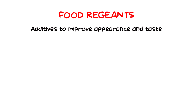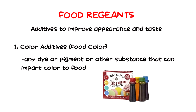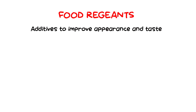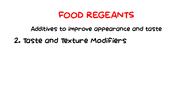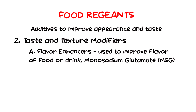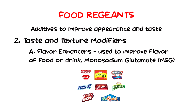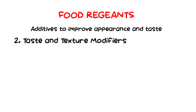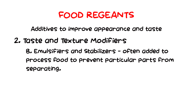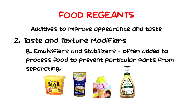Another material found in the environment are the food additives. They are additives to improve appearance and taste. We have two categories under it. Number one is color additives or food color — any dye, pigment, or other substance that can impart color to food. Next are taste and texture modifiers: flavor enhancers used to improve flavor of food and drink with monosodium glutamate or MSG, and emulsifiers and stabilizers, which are often added to processed food to prevent particular parts from separating. Examples are margarine, mayonnaise, ice cream, and salad dressing.